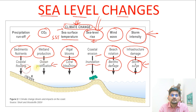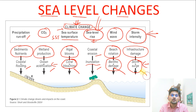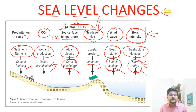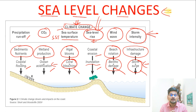So when we say sea level changes, all these attributes — coastal flooding, ocean acidification, coral bleaching, inundation, benthic damage, and storm surge — are going to be impacted directly or indirectly. We are worried because it has been observed that due to extreme climate change and extreme global warming, the levels of the sea are rising and are going to rise further in the coming times.